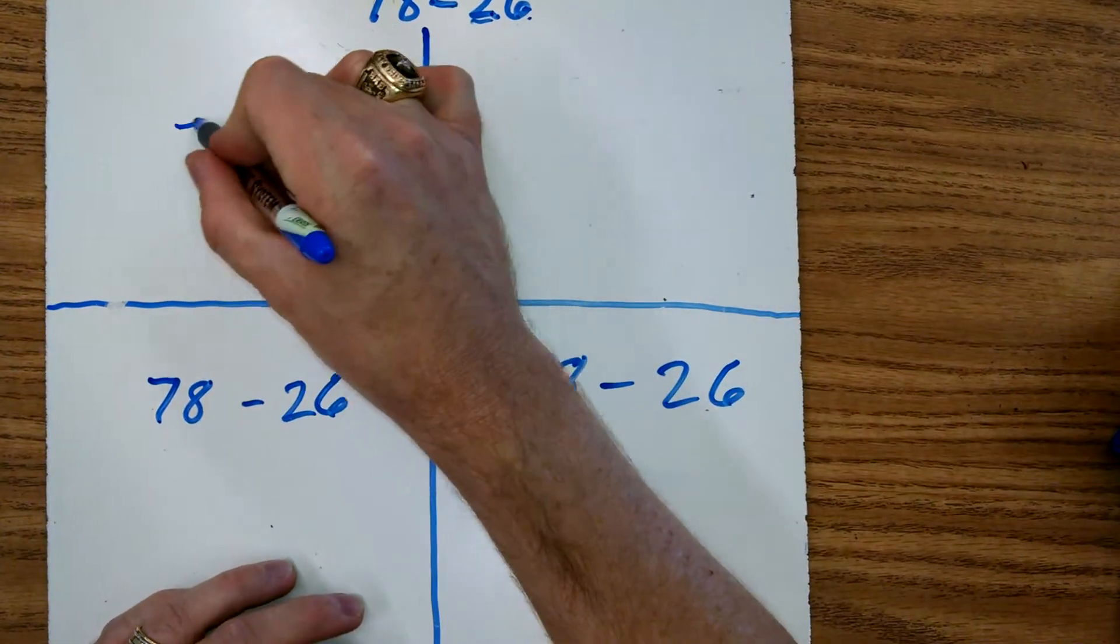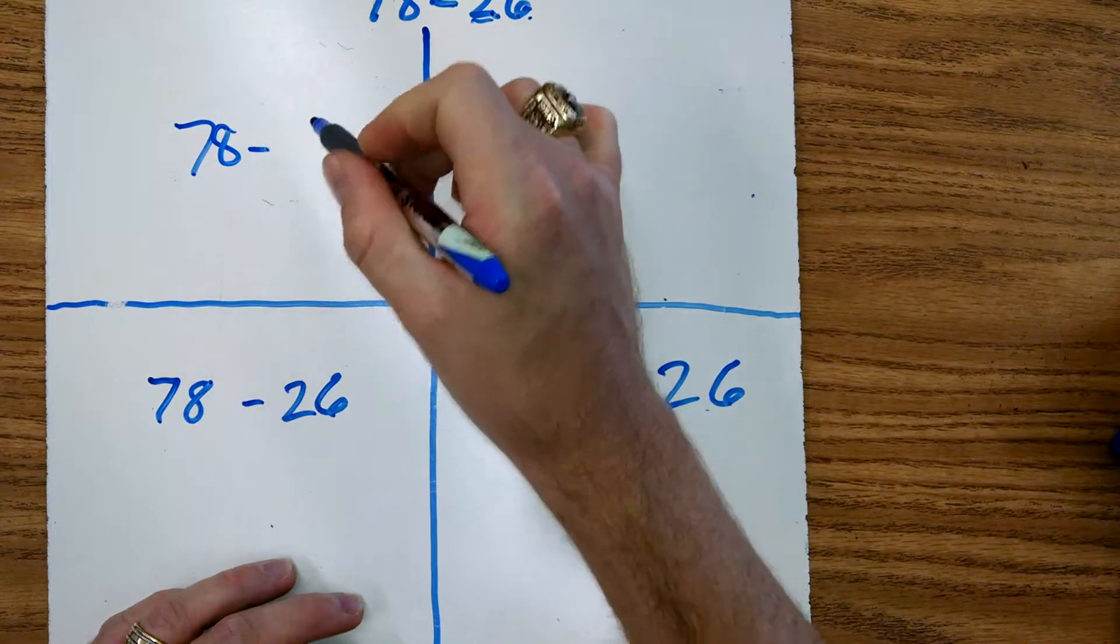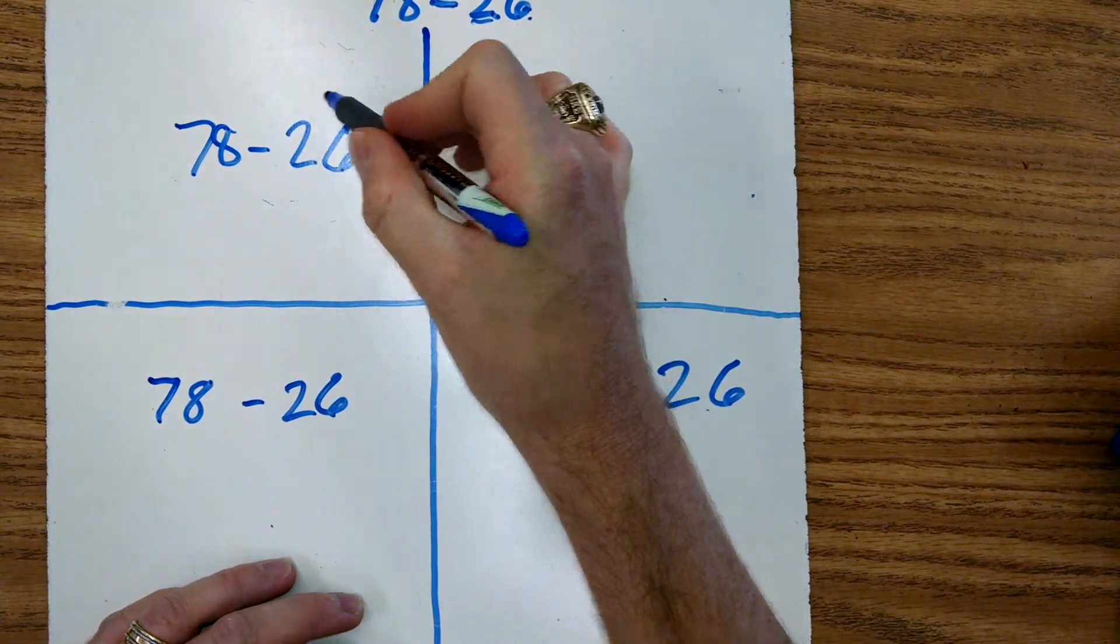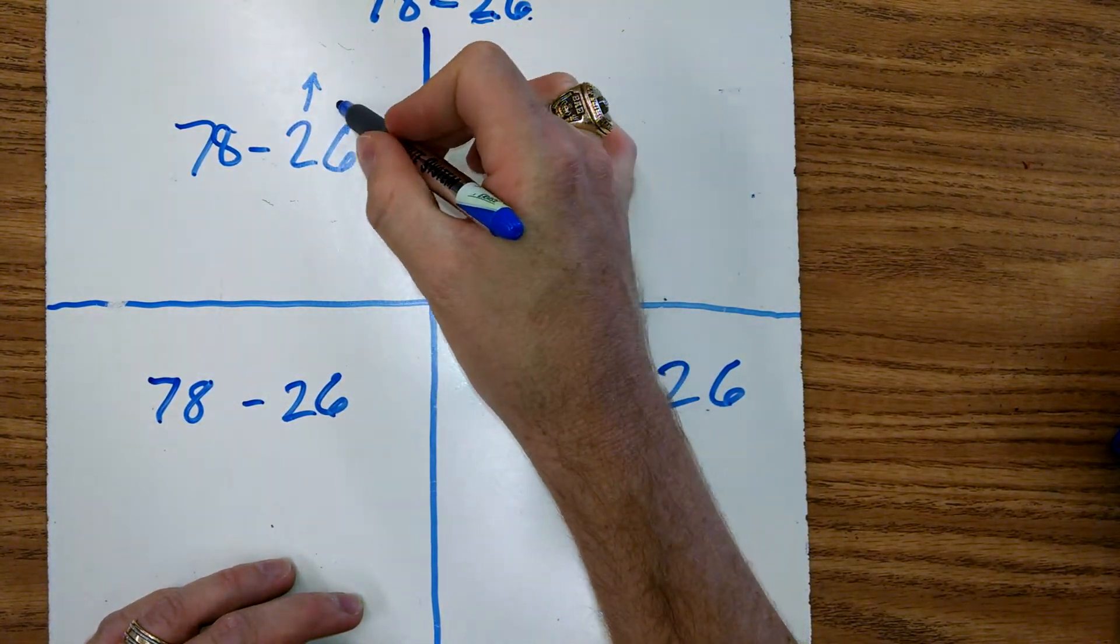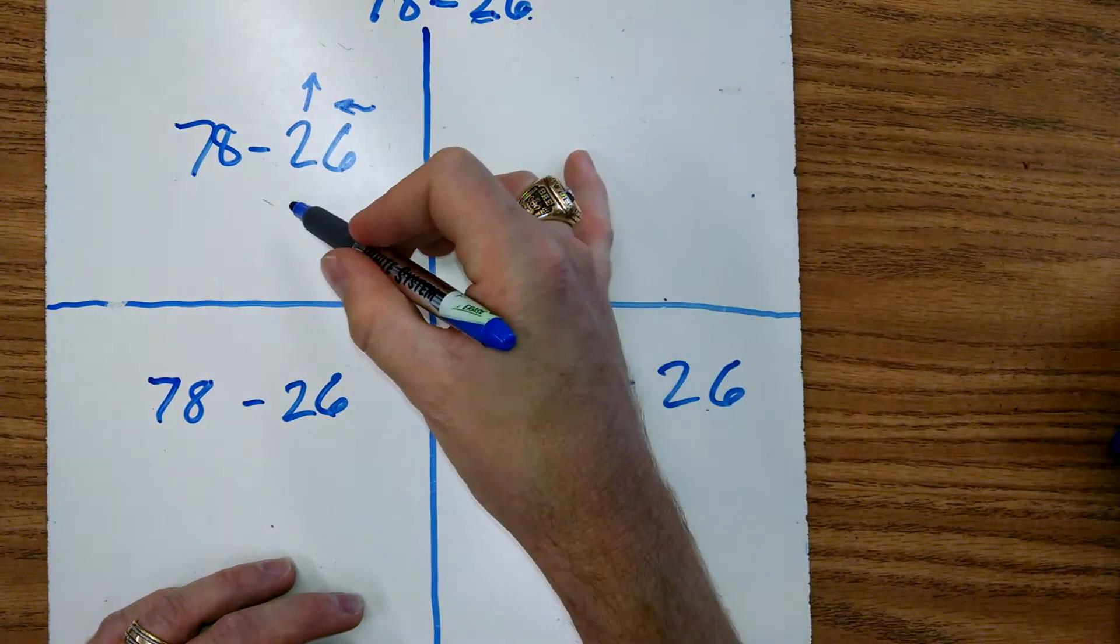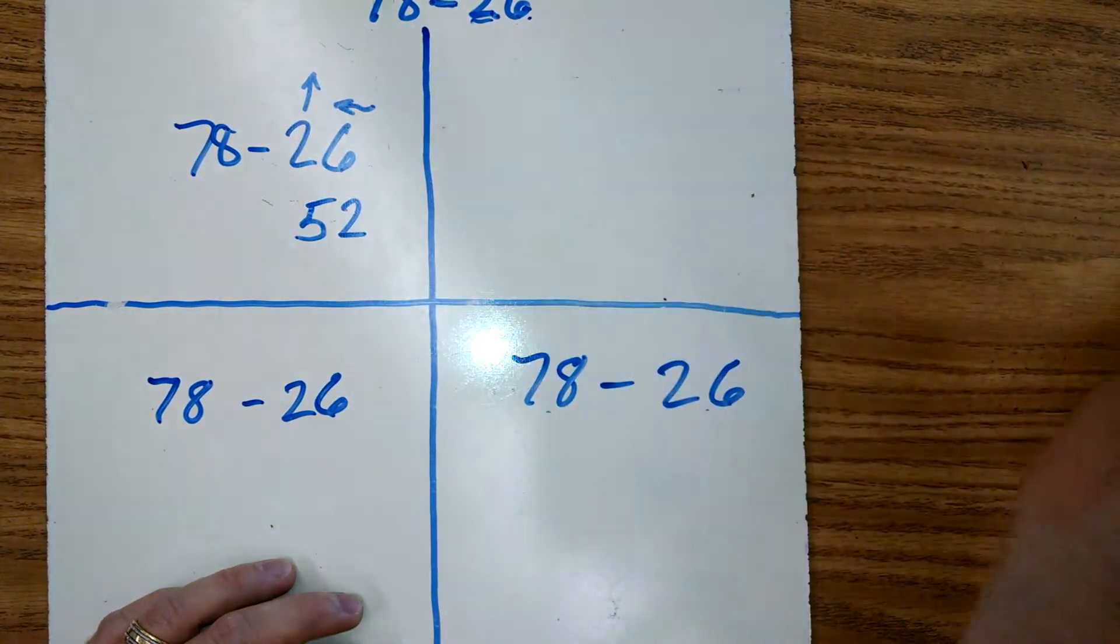Alright, so our answer for that was 78 minus 26. We go up our tens and we go back our ones. And we got 52 for an answer.